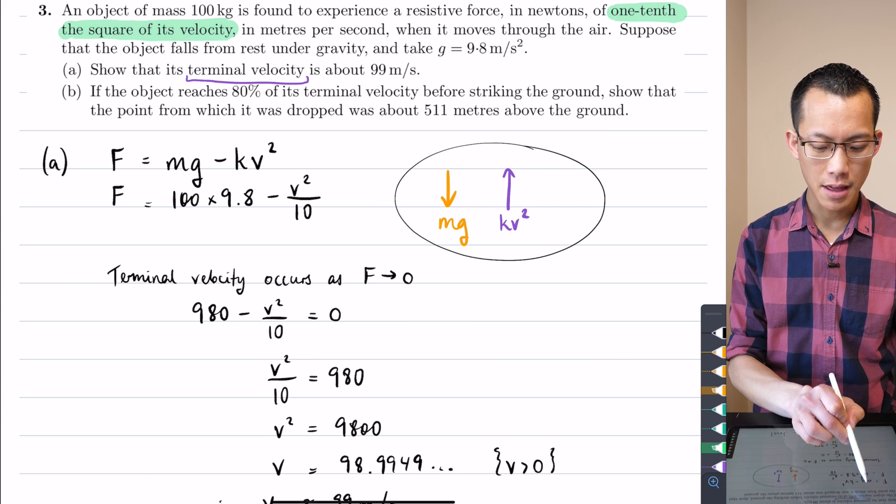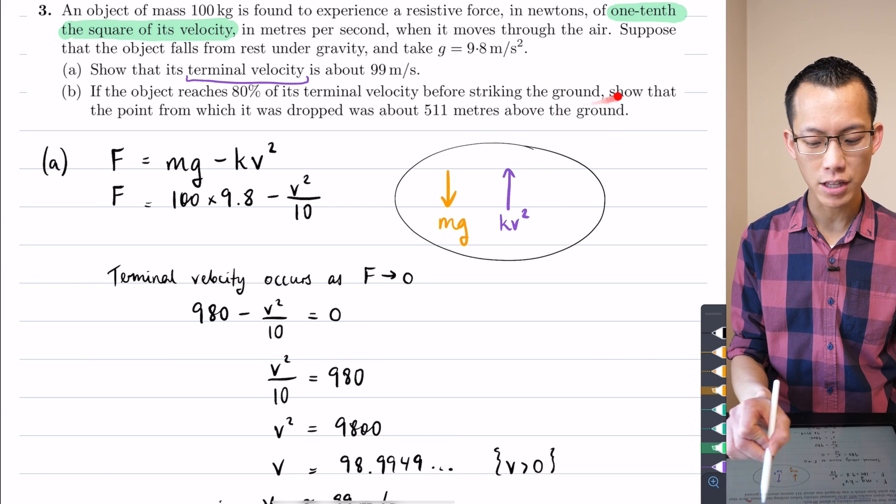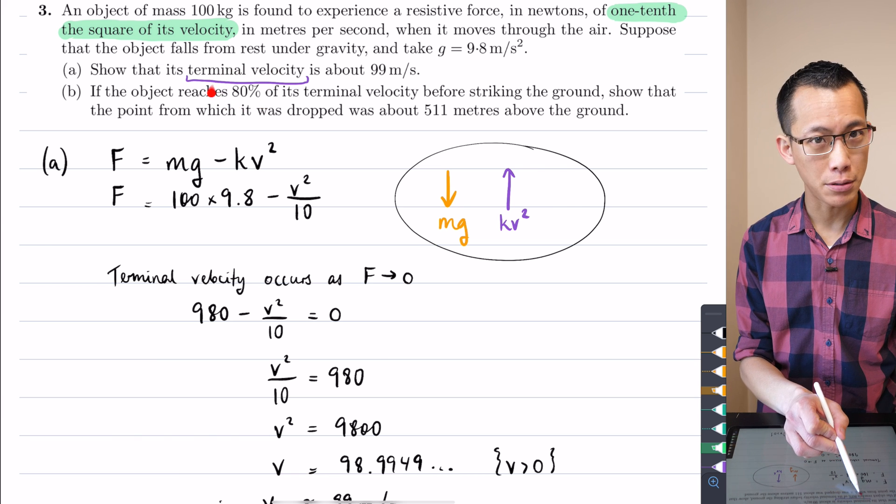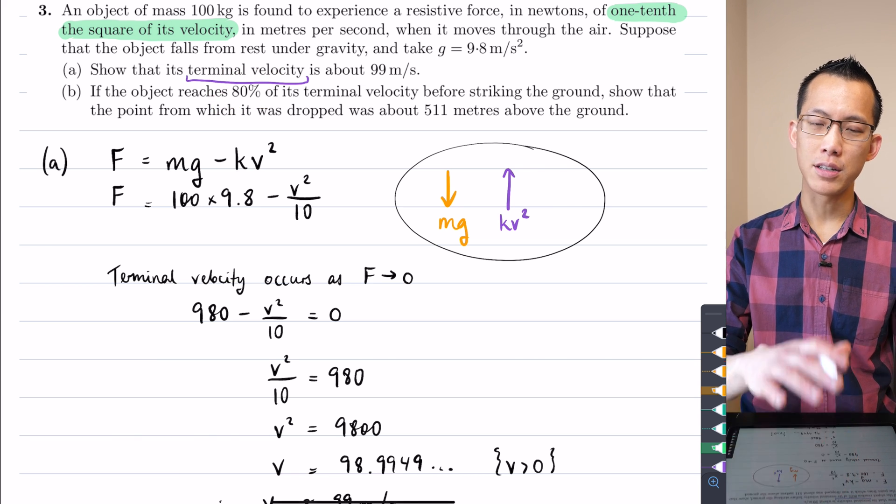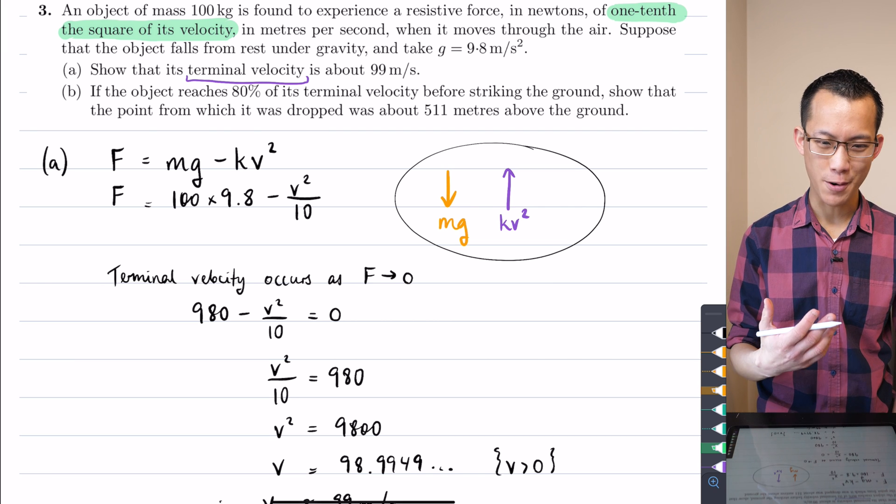But this question is telling us that we don't get there. The object is going to strike the ground before it hits its terminal velocity. It's only going to get to 80% of its terminal velocity, so I'm going to be solving for when that's going to be equal to zero.